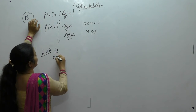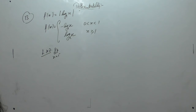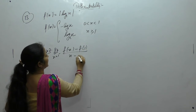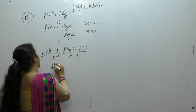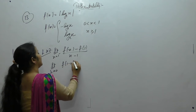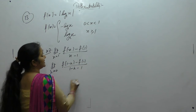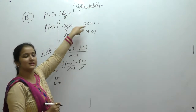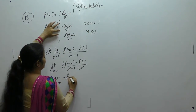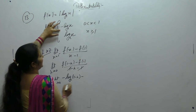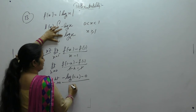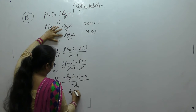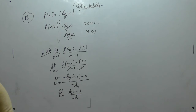Left hand derivative: limit x tends to 1 negative of [f(x) − f(1)] / (x − 1). We can write it as limit h tends to 0 of [f(1 − h) − f(1)] / (−h). Since x < 1, f(x) = −log x, so f(1 − h) = −log(1 − h). And f(1) = log 1 = 0. So we are left with log(1 − h) / h.